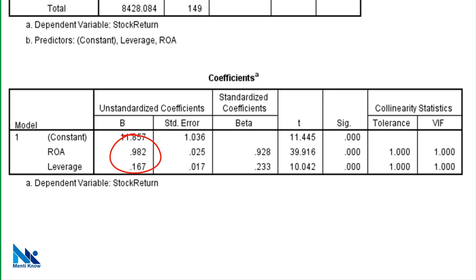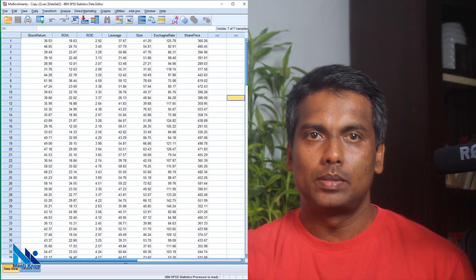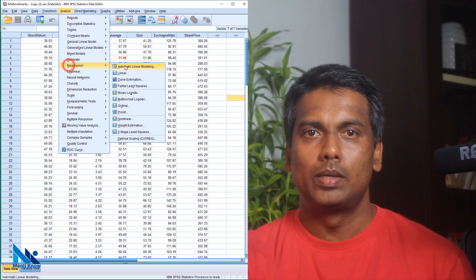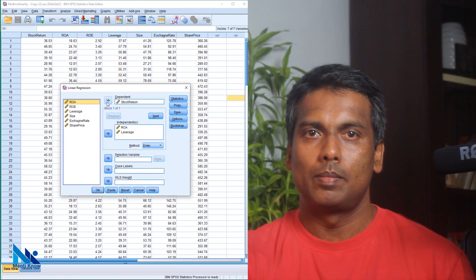As mentioned earlier, if our regression results are reliable, these estimated coefficients should remain unchanged even if we add or remove other independent variables into the model. So let's see what happens if I add one more independent variable into our model. This time I am going to add exchange rate into our model.